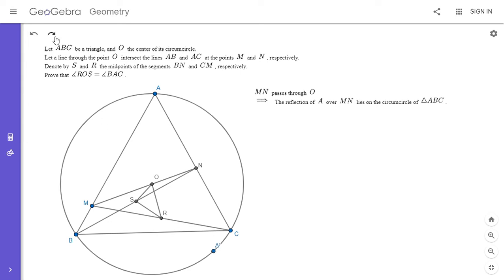So I'm going to let D be the reflection of A over MN. Then it's clear that triangle DMN has to be congruent to triangle AMN.